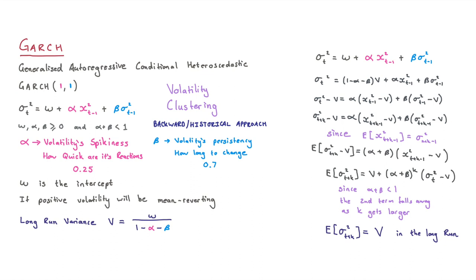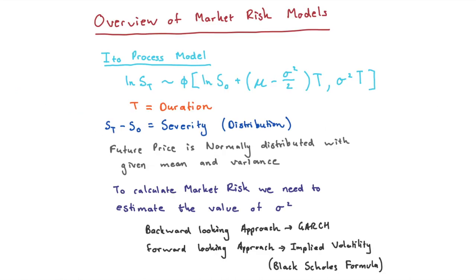So anyway, thanks guys so much for watching. Let me maybe show it to you here. This is kind of where we will now use our variance is in this Ito process model. And this is, like I said, the backward looking approach using GARCH.